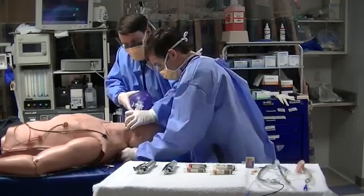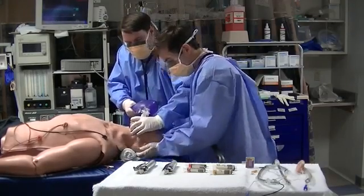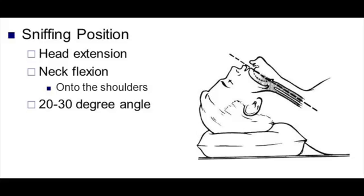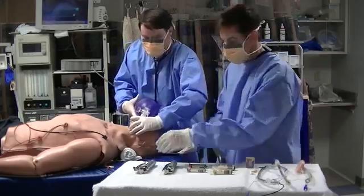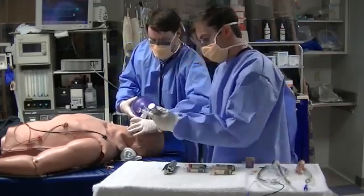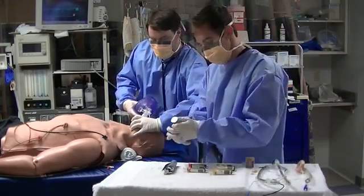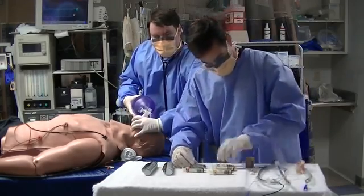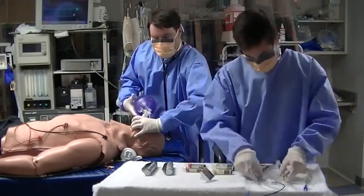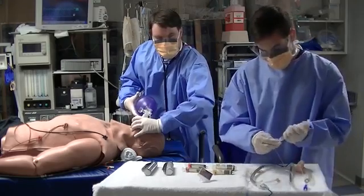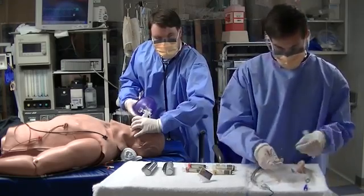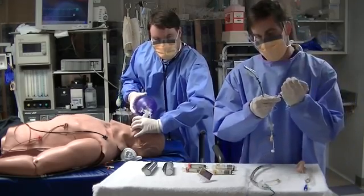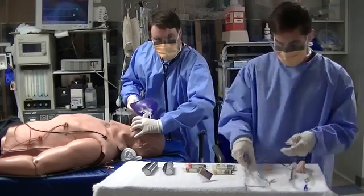Note how the provider uses a rolled-up towel to place the head in the sniffing position, which helps minimize airway resistance and get a better look at the vocal cords. The provider then checks his laryngoscope blades to make sure the light source is working adequately, and he has not just one but a backup blade as well. He then checks both endotracheal tubes and inflates the cuff of both tubes to ensure his equipment is functioning properly.